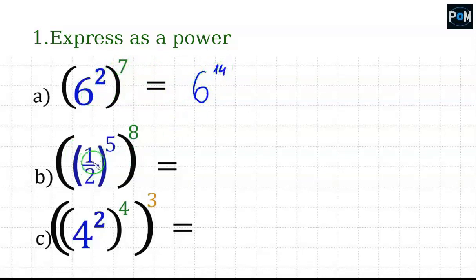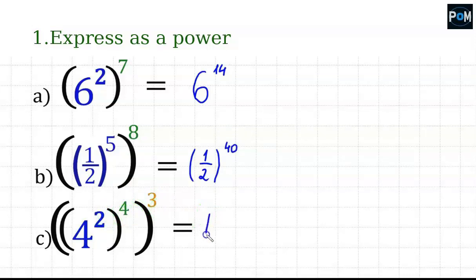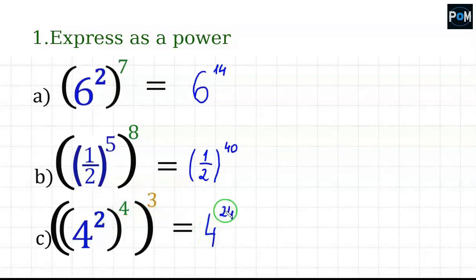In example B, we have a fraction, but it's essentially the same. This one-half fraction must also appear in the result. We need to multiply the exponents 5 and 8 — that's 40. In example C, we have a power of a power raised to a power again. This triple power doesn't change our rule. The base is 4, and we multiply all three exponents: 2 times 4 equals 8, then times 3 gives us 24. The result is 4 to the power of 24.